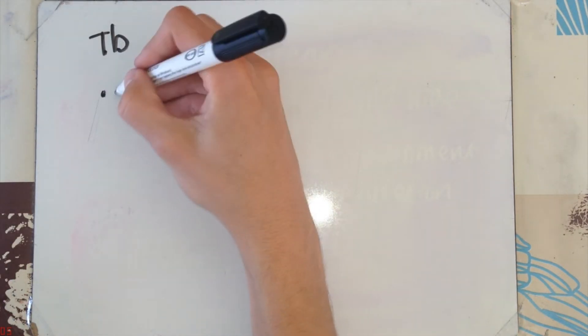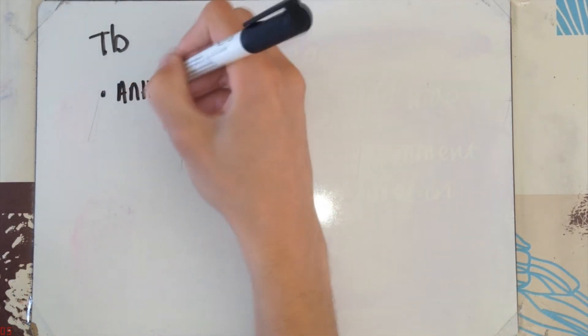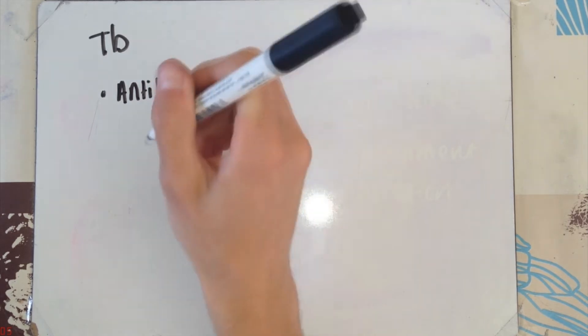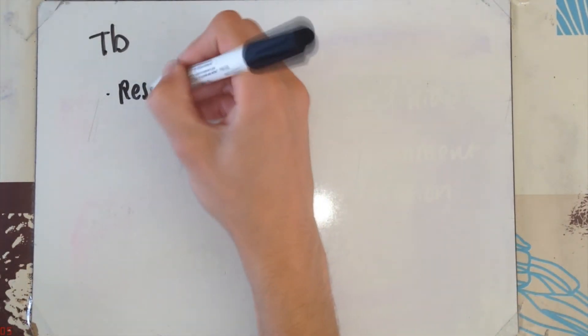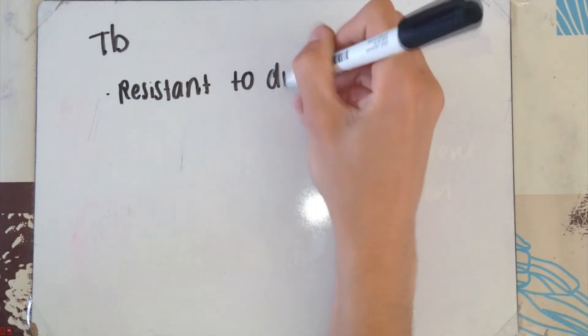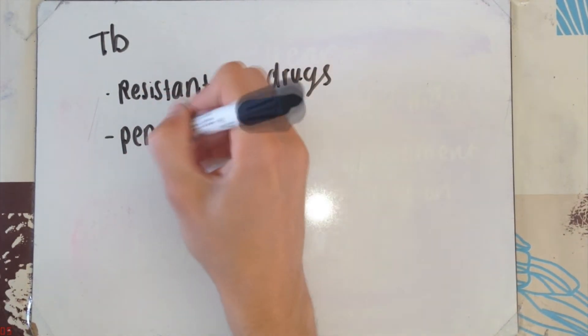The problem with tuberculosis is that, as infected as it is, there are treatments available. However, more and more cases are popping up each year of antibiotic-resistant tuberculosis. Common antibiotics include methicillin and penicillin.